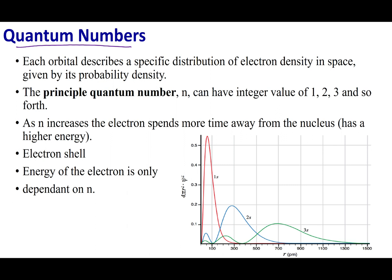Let's talk about the first quantum number, called the principal quantum number, abbreviated by n. The restriction on n is it can be 1, 2, 3, and so on — whole positive numbers that are not zero. N tells you the energy of the electron and how far the electron can be from the nucleus. It is often called the electronic shell.